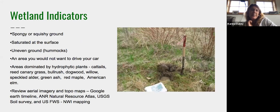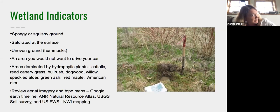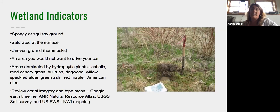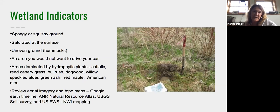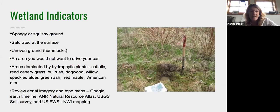Wetland indicators — the biggest is squishy ground. If you are walking and you feel squishy ground, you're likely in a wetland. Saturation at the surface and uneven hummocks — that micro-topography of pits and mounds — is where the root system of vegetation is weak because you're in a wetland. Trees have fallen down over time creating these hummocks and low areas. Areas you wouldn't want to drive your car could also be a wetland.